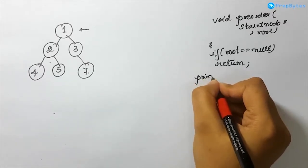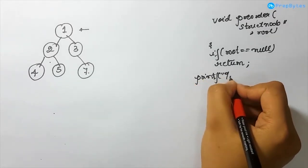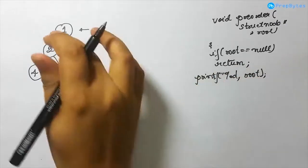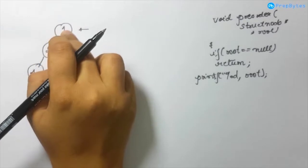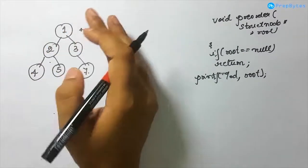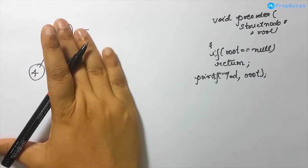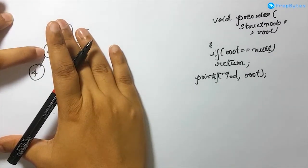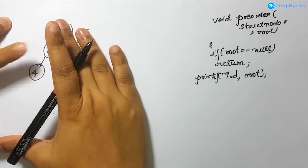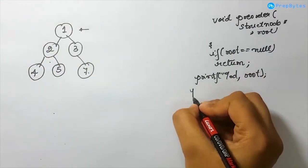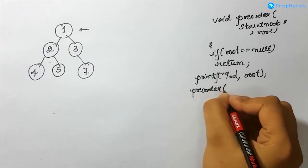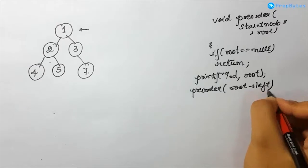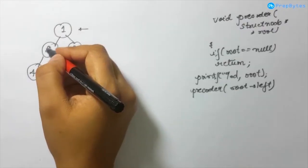So I print root. After I have printed the root, I know that I have to traverse the left subtree. This is again a new subtree that I have to traverse — how do I traverse it? By passing a pointer to this particular node. And how do I get access to that particular node? By going to the left of root. This will point to this particular node.